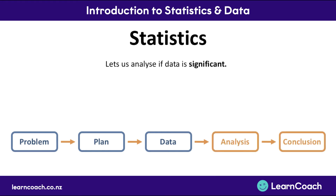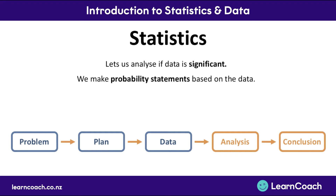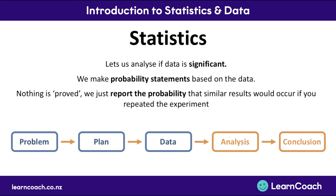Statistics lets us analyze if data is significant. If data is significant, that means the outcomes or numbers we've found are probably not due to random chance. If data isn't significant, it's likely due to random chance. Because every time you conduct an experiment or gather data, your results could be due to random chance. So we make probability statements based on the data to see how likely it is that chance played a factor. Nothing is ever really proved — we just report the probability that similar results would occur if you repeated the experiment.